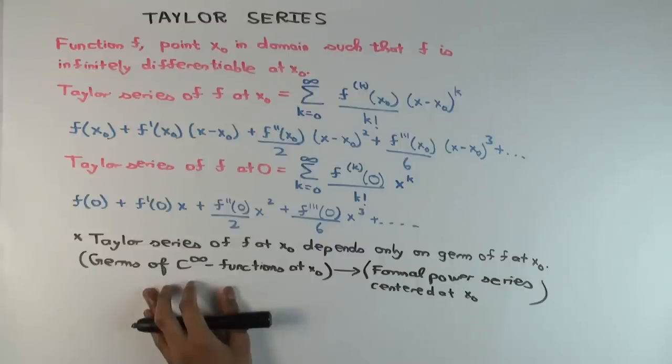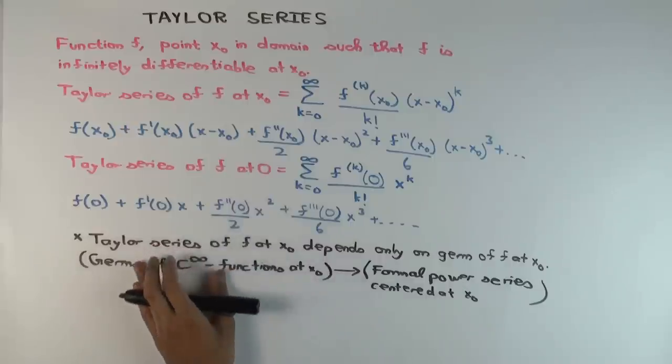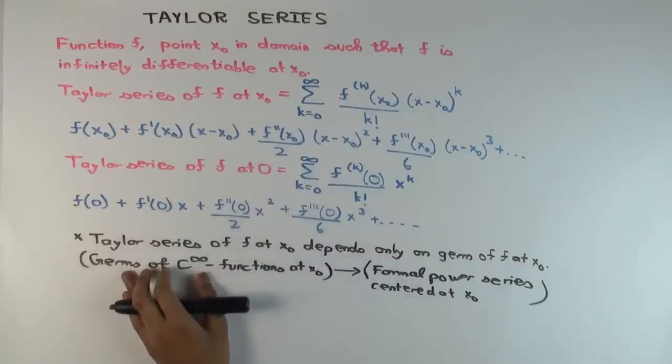And now what we'll show in subsequent videos is that this is well-behaved in various ways. So it respects addition, multiplication, subtraction is similar to scalar multiplication. And in some sense, it respects composition as well. We have to be a little careful with formulating that. So that's one thing we'll be seeing in future videos. In the immediate next video, we'll do some examples of Taylor series computations. And we'll see how that works.